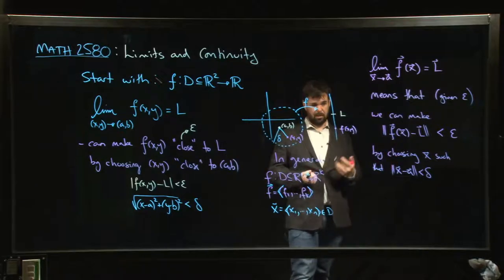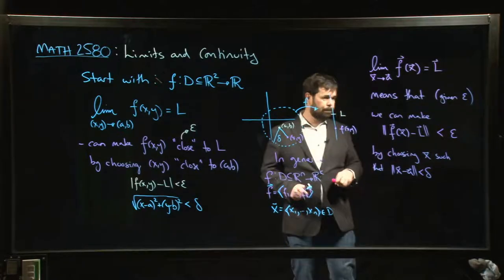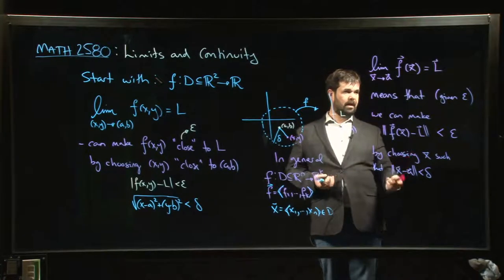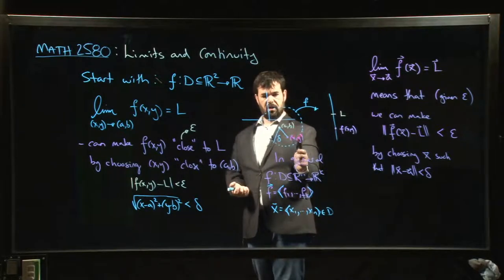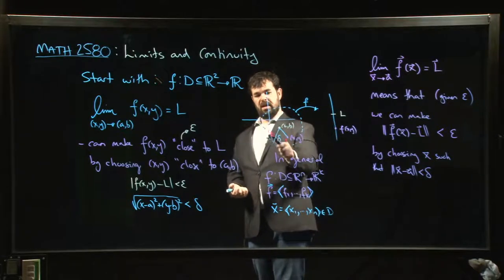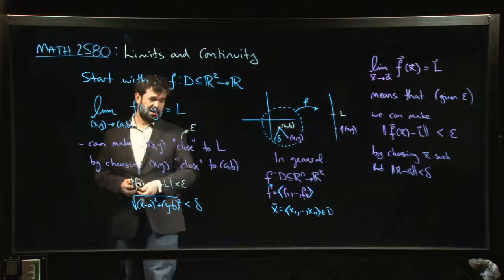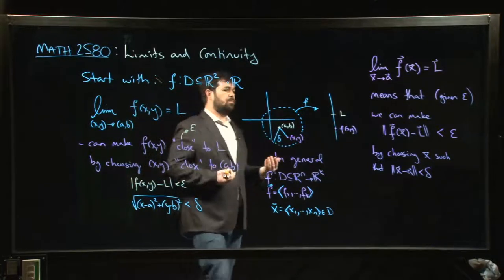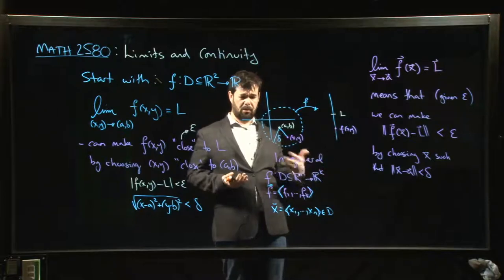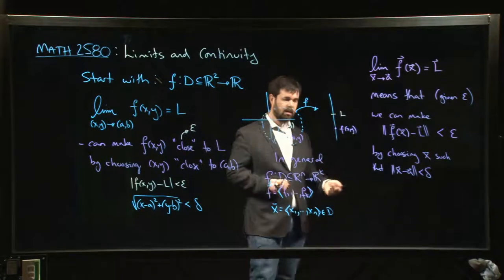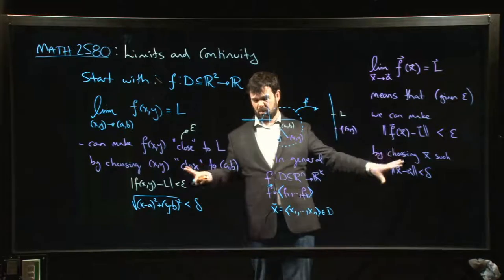We're not going to do epsilon-delta proofs for limits — they get really complicated and messy. The main thing to keep in mind is that in one variable you can only approach a point from two directions, but here you're dealing with points within a disk, so there are infinitely many ways to approach a point. This complicates things: you can never really be sure a limit exists just by considering approaches along various paths, because you can't enumerate all paths. The only way to truly confirm a limit exists is to do one of these limit proofs.